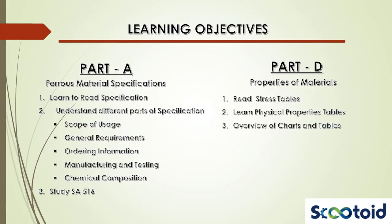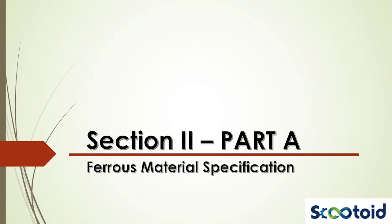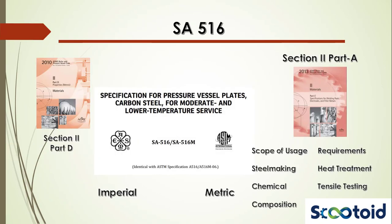In this module we'll focus on Parts A and D. The goal in studying Part A will be to learn how to read a specification of a material. You'll be exposed to different parts of a typical specification like scope of usage, general requirements, ordering information, specifics related to manufacturing and testing, and chemical composition. We'll look at a commonly used material specification, SA 516. Once you know how to read this specification, you'll be able to read the others by yourself.